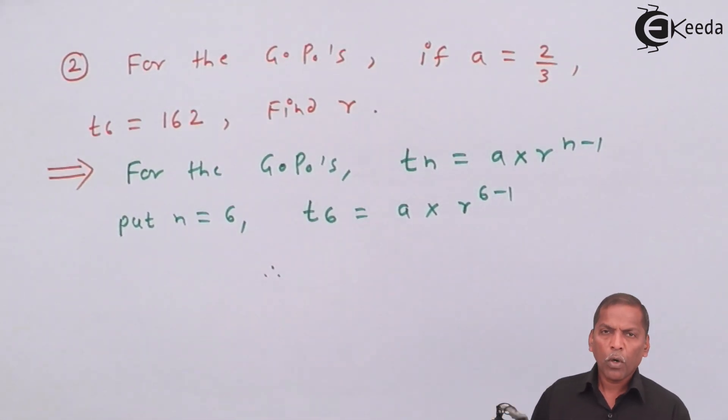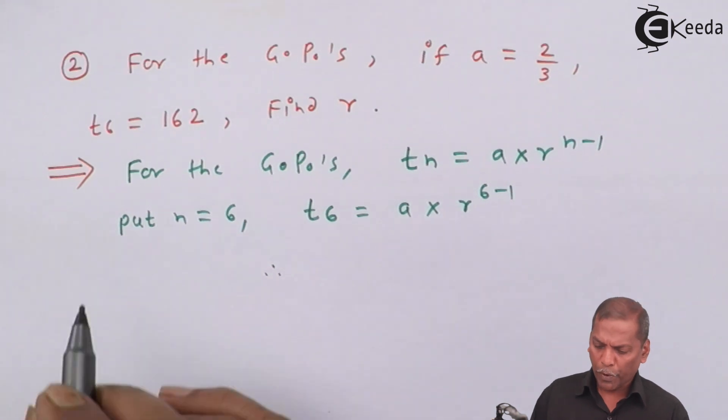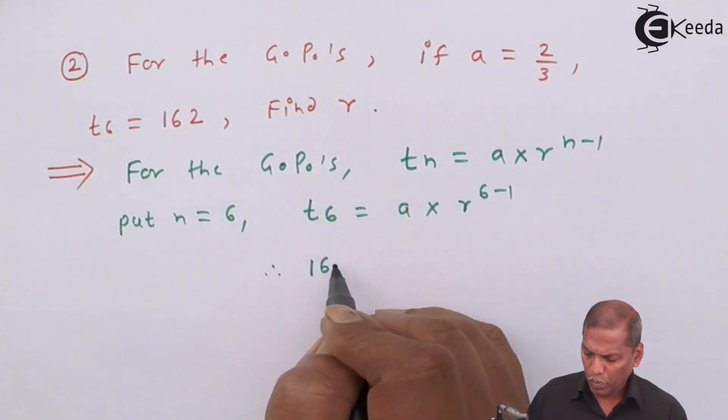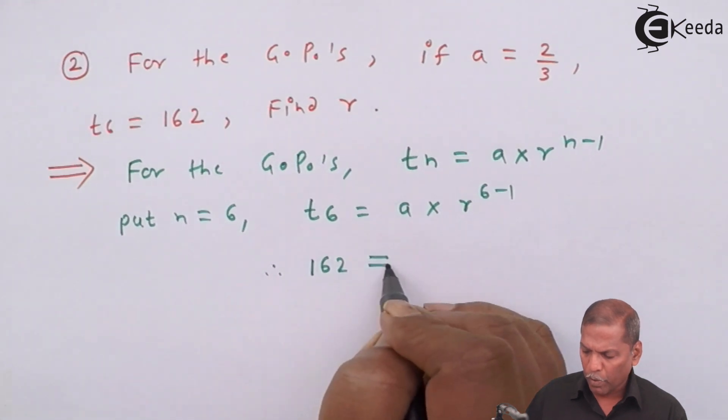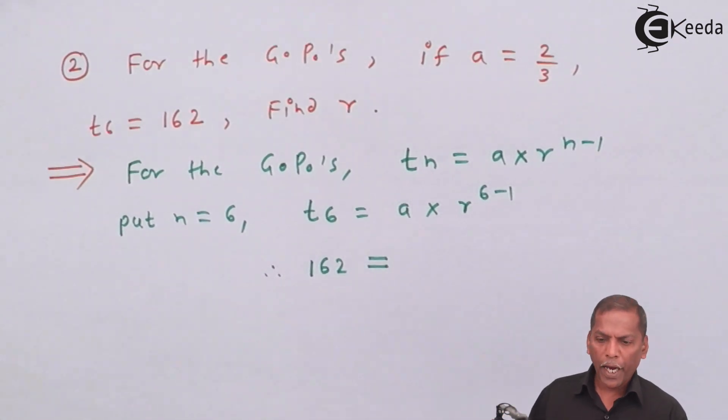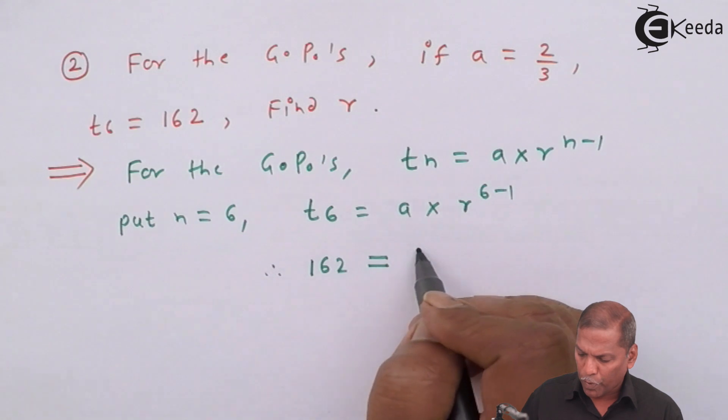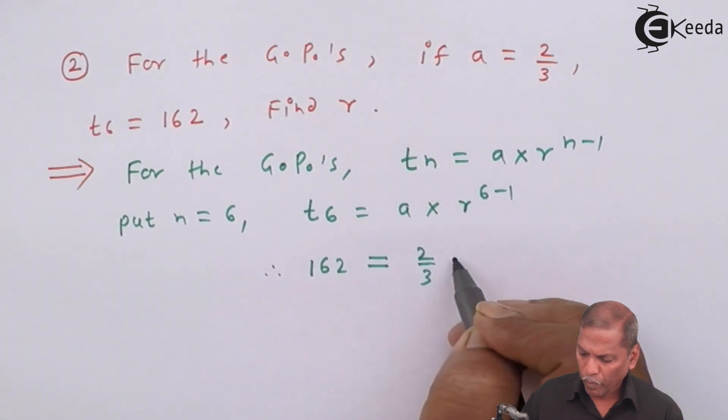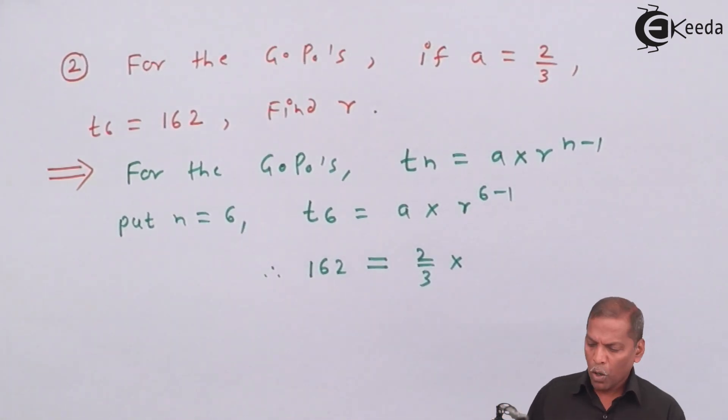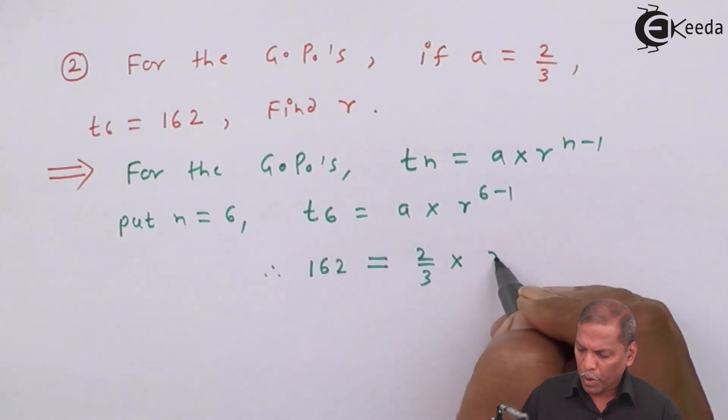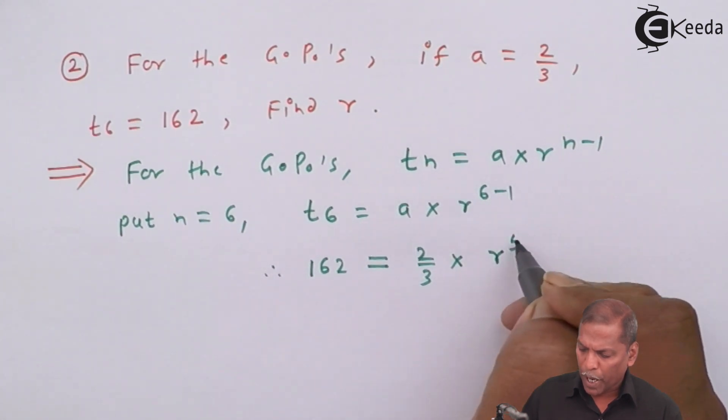So we get T6 equals A times R raised to 6 minus 1. Therefore, for T6, we substitute 162. That equals, for A, we substitute 2 upon 3 times R raised to 6 minus 1, which gives 5.